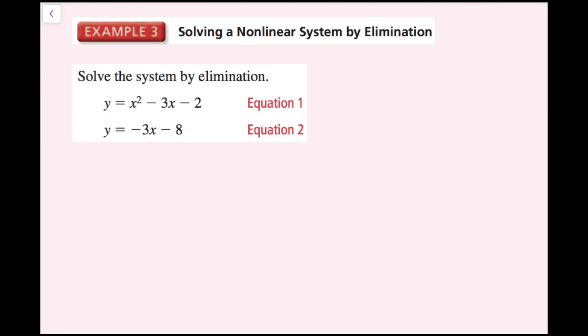For this example, we're going to solve the system by using elimination. Elimination can be advantageous here because I see that I have a y on both equations with the same coefficient and a negative 3x term in both. So I can subtract one equation from the other to cancel out both the y's and the negative 3x terms.